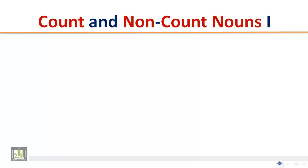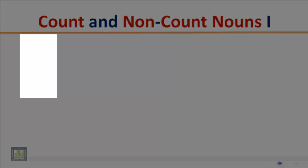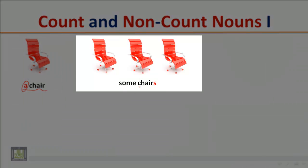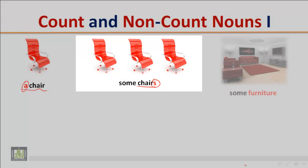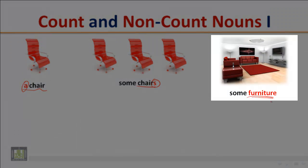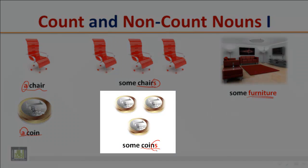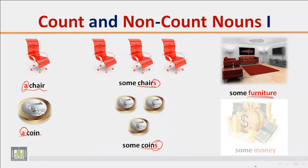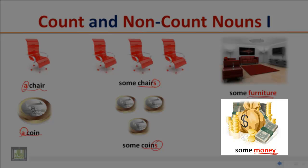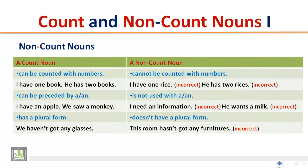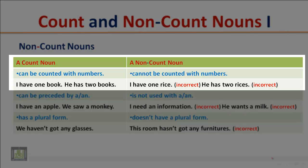Look at the following pictures and pay attention to the count and non-count nouns: a chair, some chairs, some furniture; a coin, some coins, some money — these are non-count nouns.